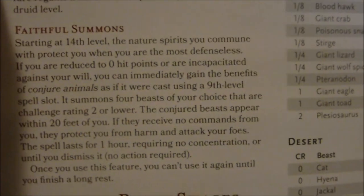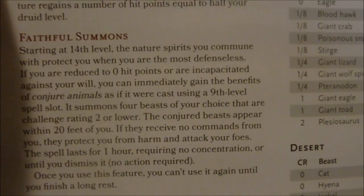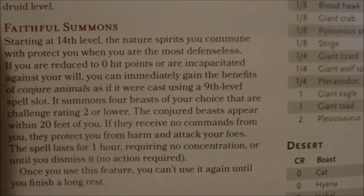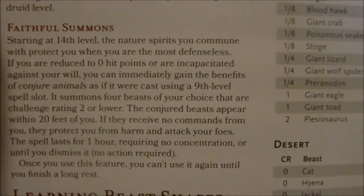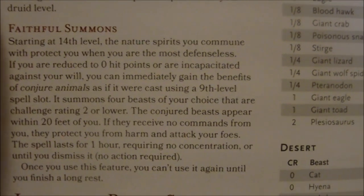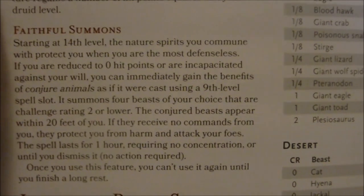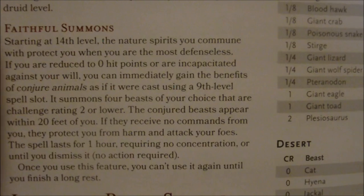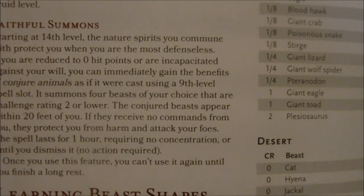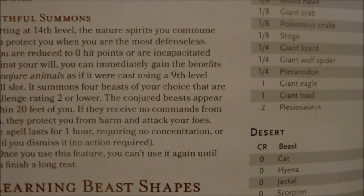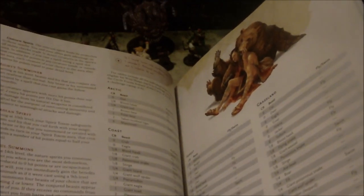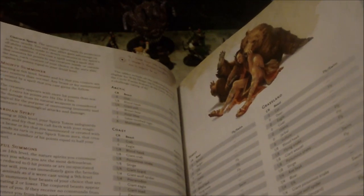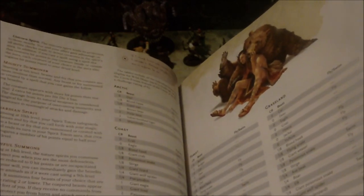At 14th level, you have Faithful Summons: the nature spirits protect you when you are most defenseless. If you're reduced to zero hit points or incapacitated against your will, you immediately gain the benefits of Conjure Animals as if cast using a ninth level spell slot — summoning four beasts of your choice that are Challenge Rating 2 or lower. The conjured beasts appear within 20 feet of you, and if they receive no commands from you they protect you from harm and attack your foes. The spell lasts one hour requiring no concentration, or until you dismiss it. Once you use this feature, you can't use it again until you finish a long rest. I kind of like this one — it makes a lot more sense for the druid, using spirits of nature to protect yourself and your allies.